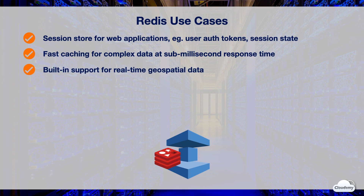Redis has built-in support for real-time geospatial data at scale. You can add location features to your applications using Redis. For instance, you can perform operations like finding the distance between two elements and finding all elements within a given distance.